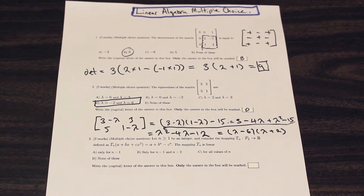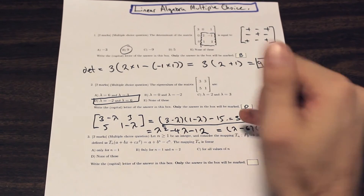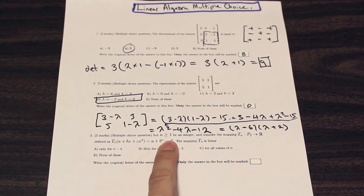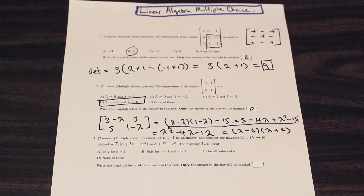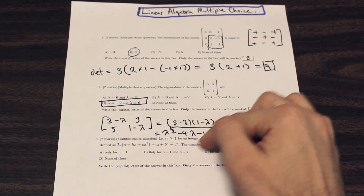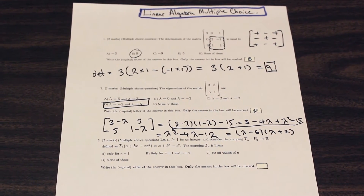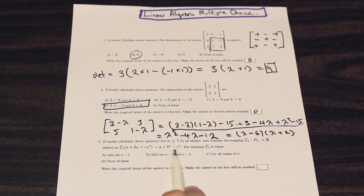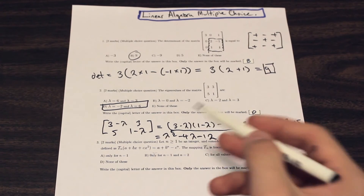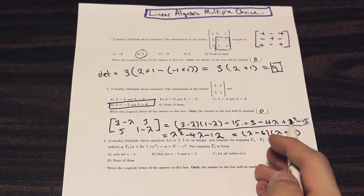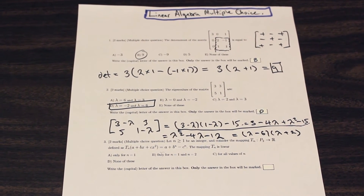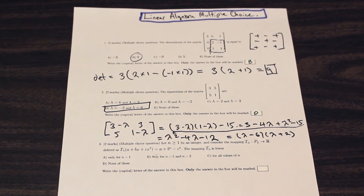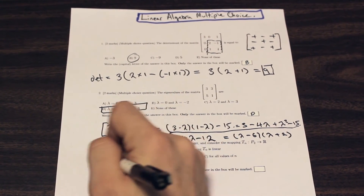Let's take a look at the third one. This is a linear mapping — essentially a mapping from a non-linear system to a linear system. We have n greater than or equal to one, and it's an integer. The question asks what value of n makes the mapping Tn linear. It looks confusing and the wording is tricky, but if you look at the expression on the right, the only value of n that makes this mapping linear is one. If you put anything other than one, the order of the values will be higher than one and it won't be linear. So the answer is A.